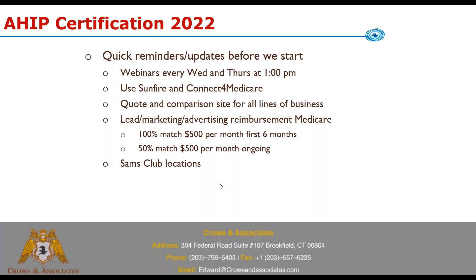Use our quote and comparison site if you haven't before — that's on pfsinsurance.com. That'll quote everything for you: Advantage, supplement, Part D, final expense, indemnity, annuity quote engines, term and UL. You can quote everything with all carriers in there. If you aren't using it, it can be a big time saver for you.